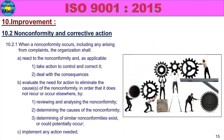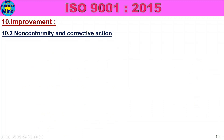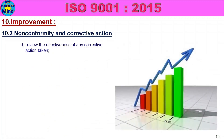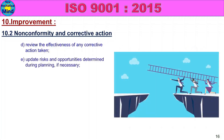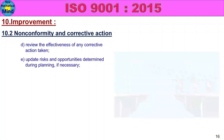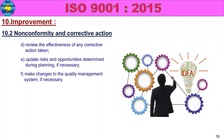Next, implement any actions needed. Review the effectiveness of corrective action taken. Update risks and opportunities determined during planning, if necessary. When we need to update the risks and opportunities, we need to update them. Make changes to the quality management system, if necessary.